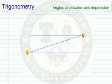The person on the ground is looking straight ahead and then raising their gaze from the horizontal to get the angle of elevation, which gives their line of sight to the other person. Let's say that's 26 degrees.